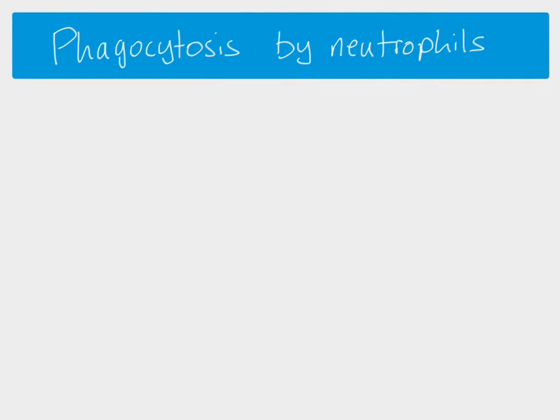Now we're going to look at phagocytosis by neutrophils. The process would basically be the same with macrophages, but there's an extra stage — macrophages can become something called an APC. That isn't covered here, but you can see what's going on if you look at the primary immune response video.